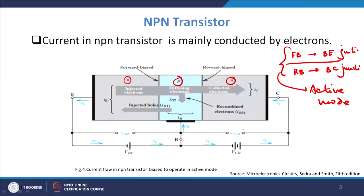When you forward bias the base-emitter junction, you reduce the depletion width on the base-emitter junction as we just discussed. When you reduce it, you force a large number of electrons from the emitter side to be injected onto the base side. This is the injected electron current flowing because you have forward biased the N-P junction here.